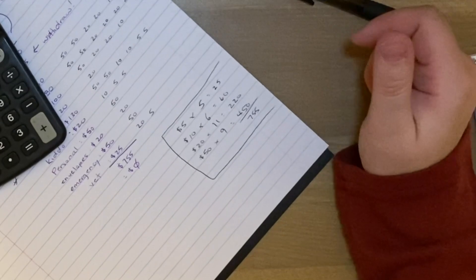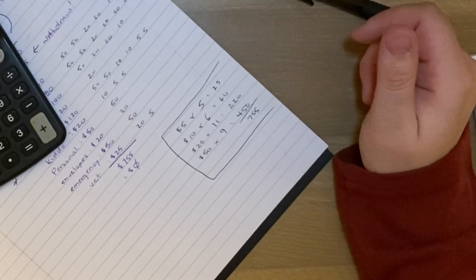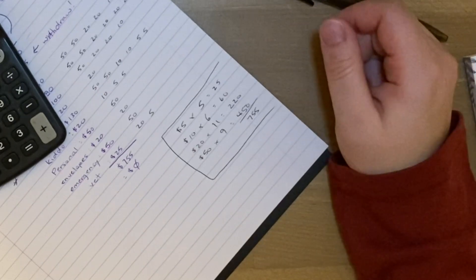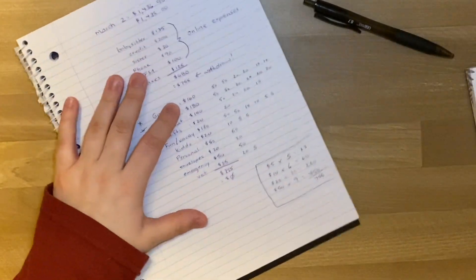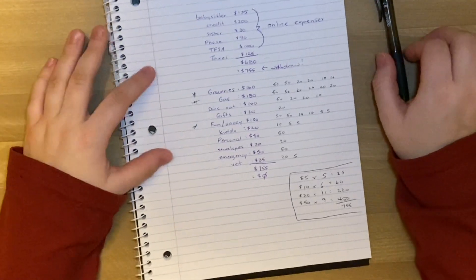I'll tell her I want $755, please. And then I will tell her I want five fives, six tens, eleven twenties, and nine fifties. And yeah, so that is how I do my budget breakdown.